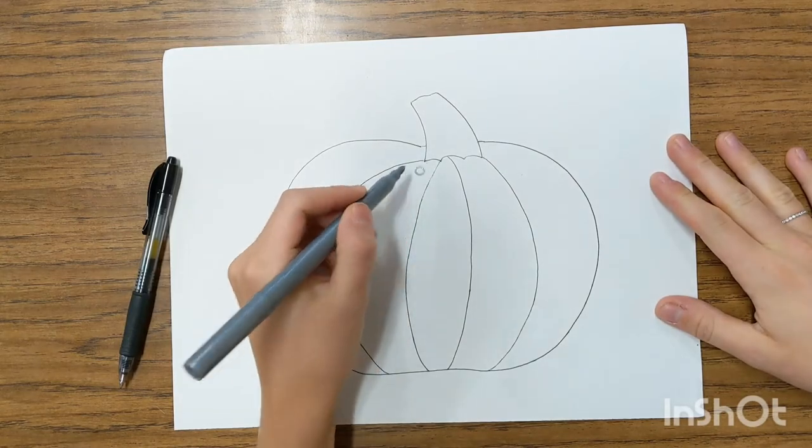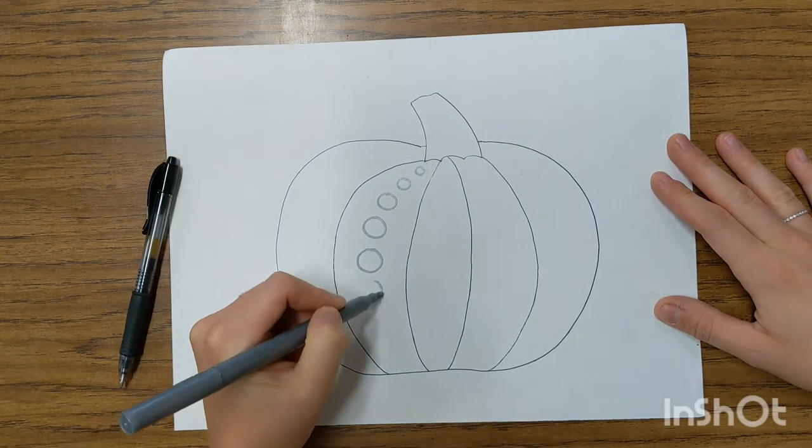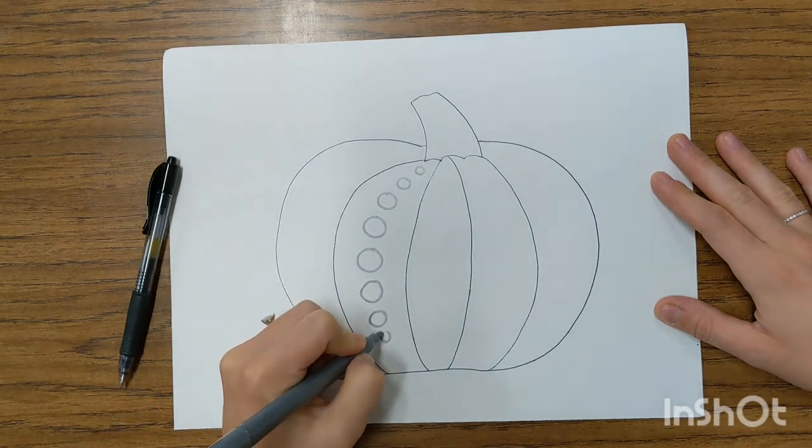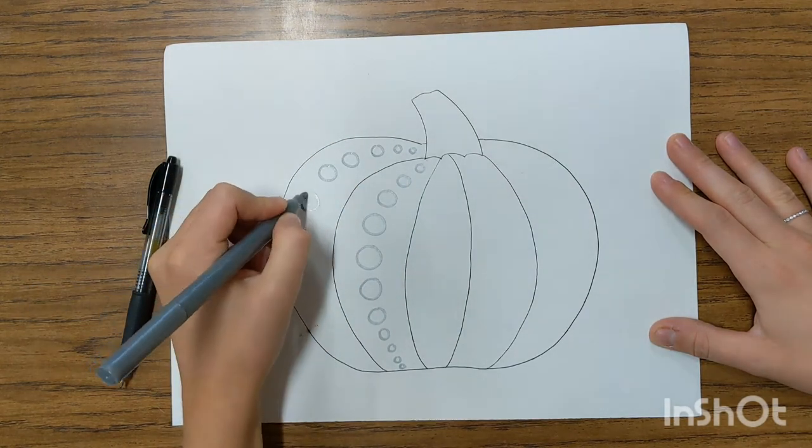Next we need to start to add polka dots on our pumpkin. You can choose to draw circles that increase in size or you can draw them the same size.